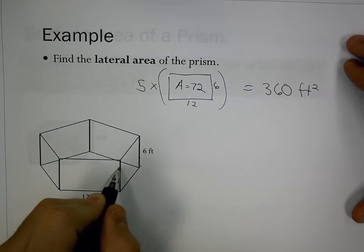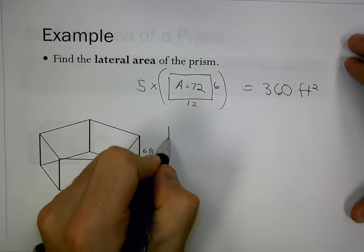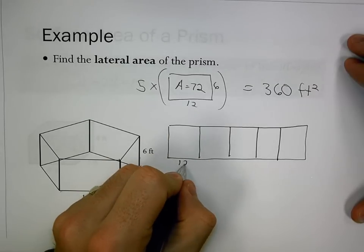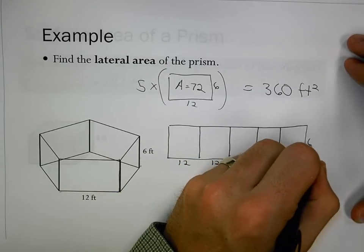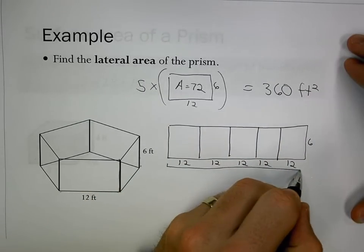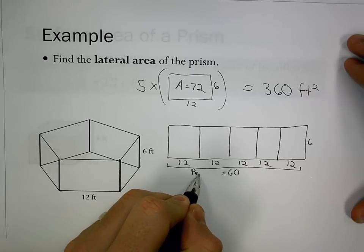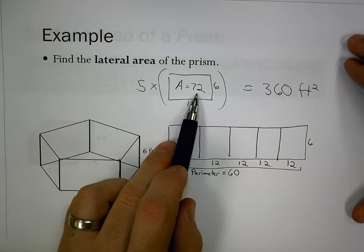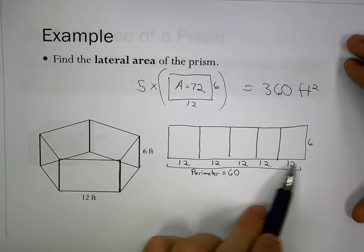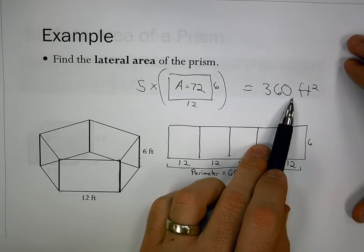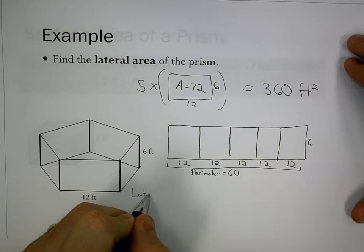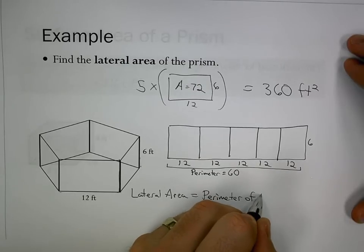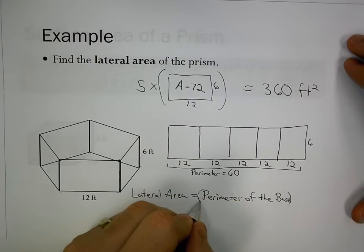For surface area, let's look at it a different way. If I cut this prism and open it up with all sides next to each other, I'd have a long rectangle with 5 pieces, each with base 12 and height 6. Combining all the 12s gives 60, which is the perimeter of this prism. So instead of 5 times 72, I can do 60 times 6, still getting 360.